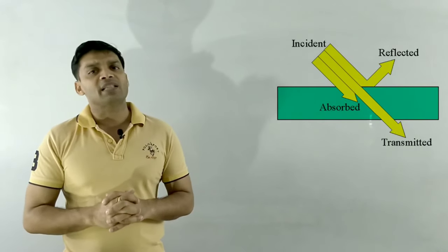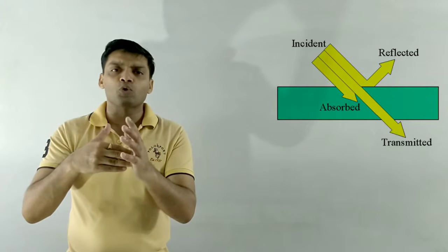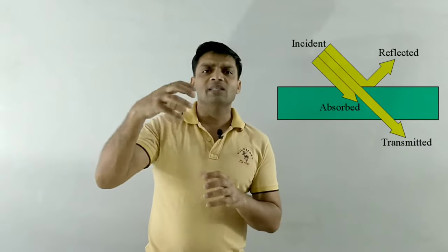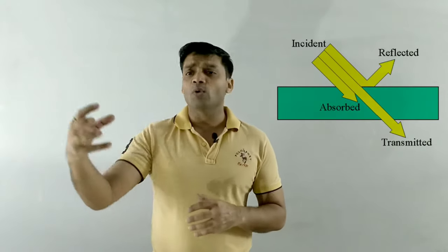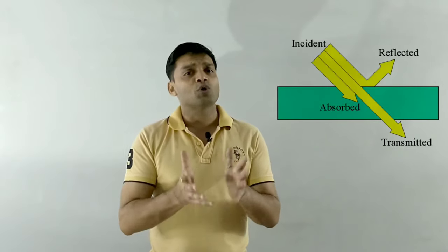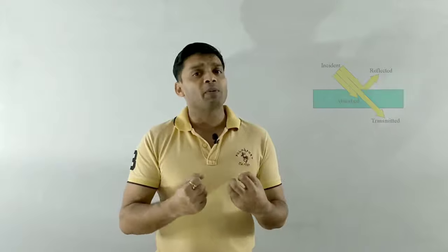The third possibility is that some part of the radiation may even pass through the body and be transmitted out. It will all depend upon the temperature as well as the material of that body. In today's video session we will not be discussing anything about transmission. In order to understand the concept of black body radiation, we just need to focus our mind on reflection and absorption.